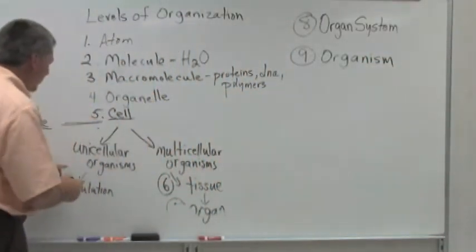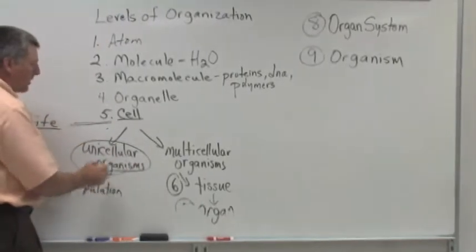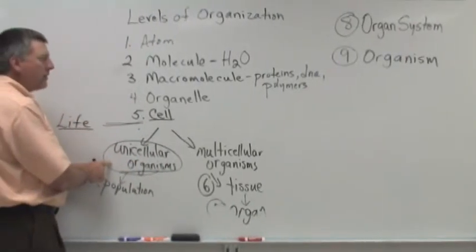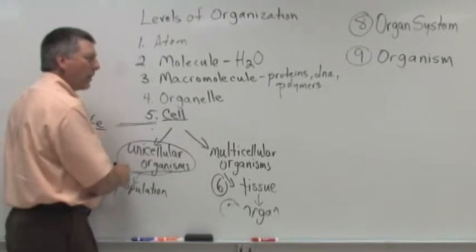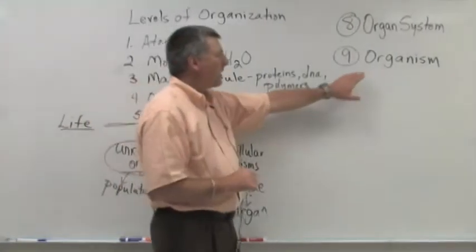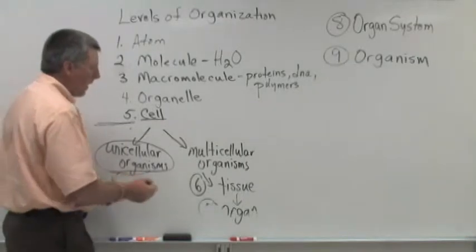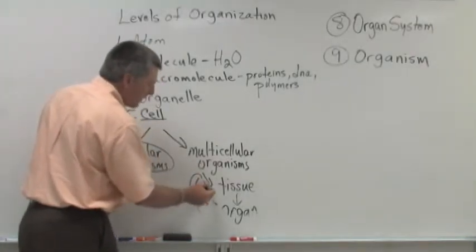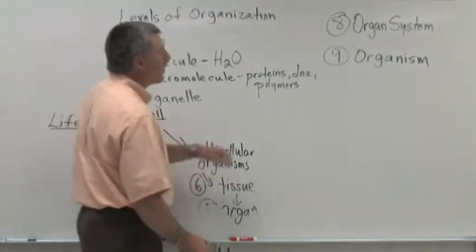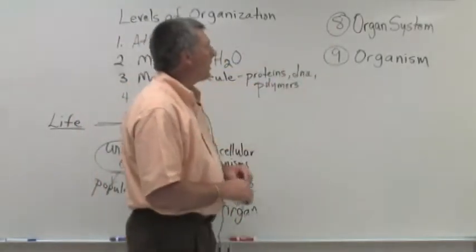And that's when we can come back and pick up our unicellular organisms. Unicellular organisms are organisms that are composed of just one cell. Multicellular organisms, on the other hand, have additional levels such as the tissue level, the organ level, and the organ system level.